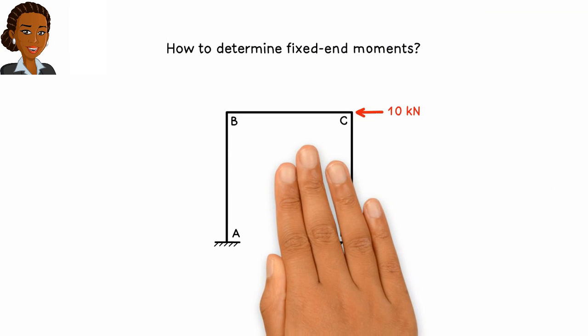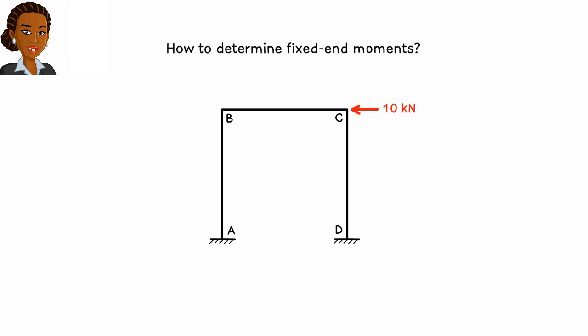We know how to calculate fixed end moments when one or more of the members are subjected to loads, but here there are no member loads. There is only one joint load. So how should we approach the problem?